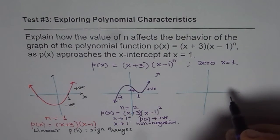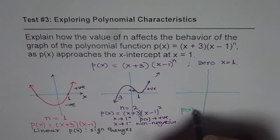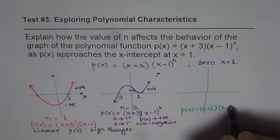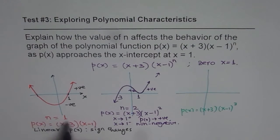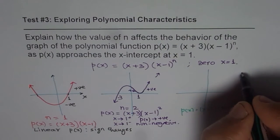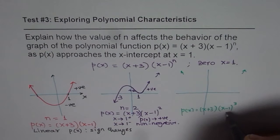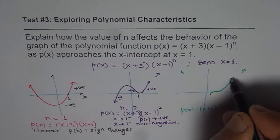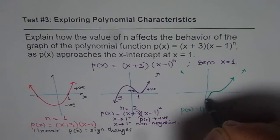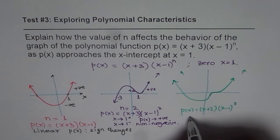In the third case, when n equals to 3, the polynomial is x plus 3 times x minus 1 to the power of 3. This becomes an odd-degree factor at x equals to 1. The overall function behaves right-side up on both ends. Since the factor at x equals to 1 is cubic, the graph will cross the x-intercept like a cubic function.